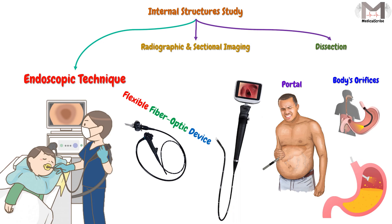So these are the main methods in studying the internal structures of the human body in the original anatomy approach. Every method has a lot of details that I will explain later in other videos. And that's it. I hope what I said makes sense. See you next video, goodbye!